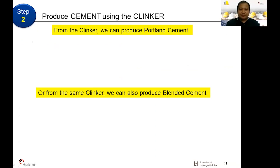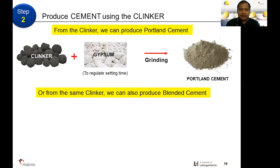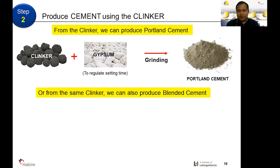To produce cement using the clinker: for ordinary Portland cement (OPC), we just add clinker with gypsum. Gypsum acts as a set retarder to control the setting time — without gypsum, adding water to clinker would cause it to harden very quickly. We grind the clinker and gypsum together and now we have Portland cement, also known as Type 1 OPC.